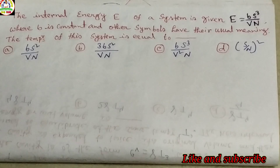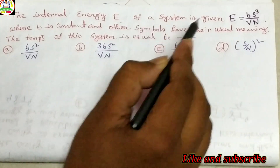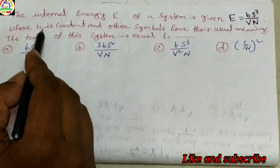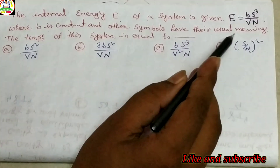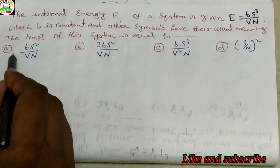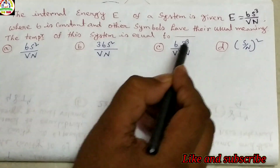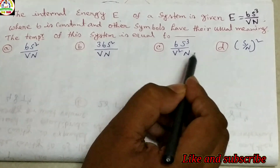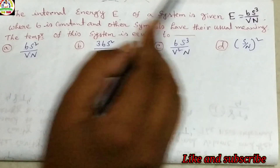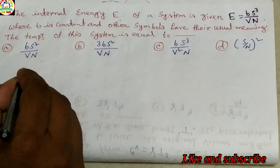Another problem from NET physics: the internal energy E of a system is given by E = bs³ / (vn), where b is a constant and other symbols have their usual meanings. The temperature of this system — options are: (a) bS² / vn, (b) 3bS² / vn, (c) bS² / v²n, (d) (S/n)², where S is the entropy and v is the volume. We use the first and second law of thermodynamics.